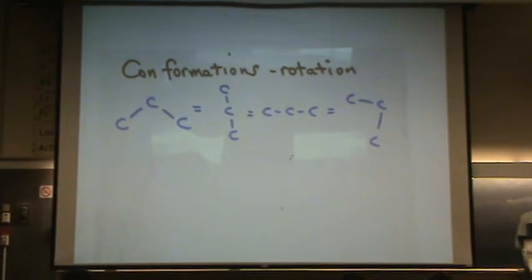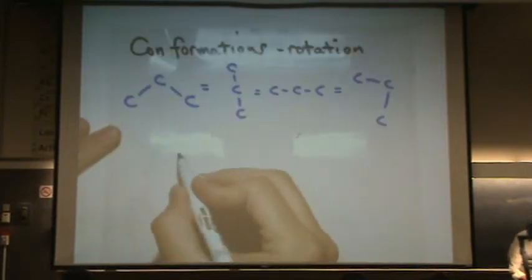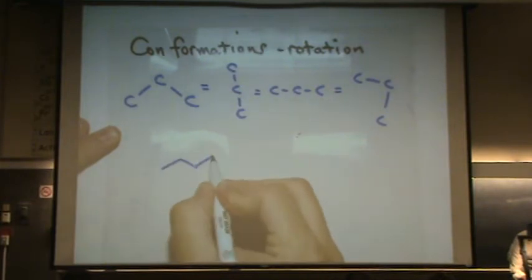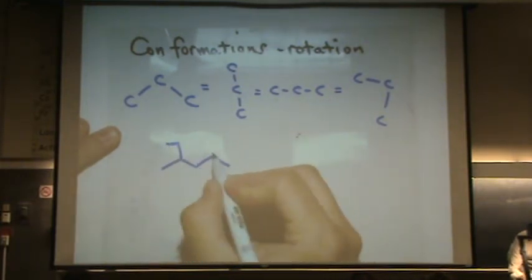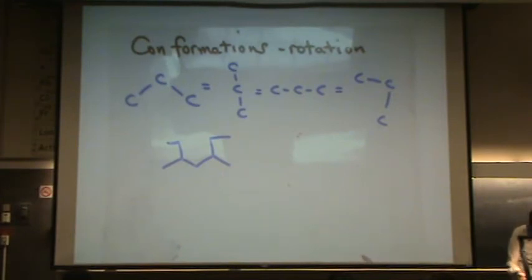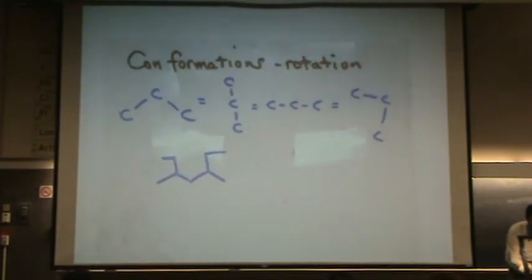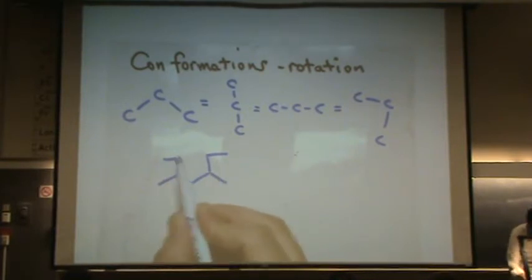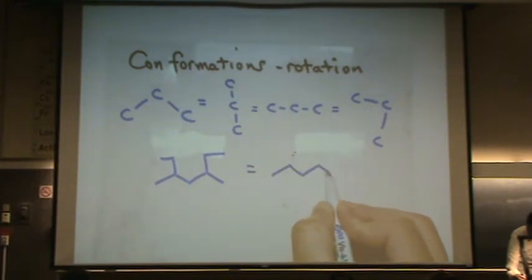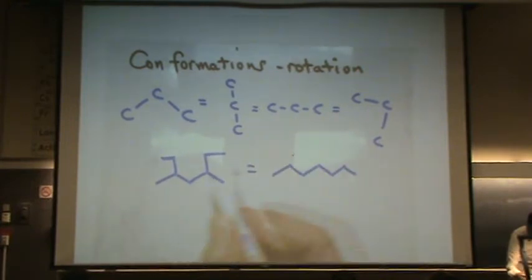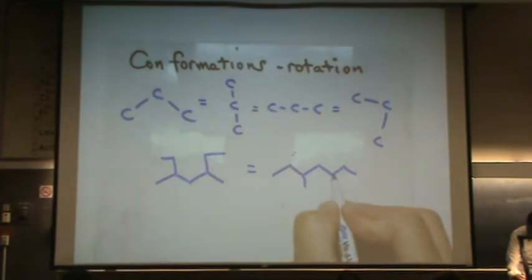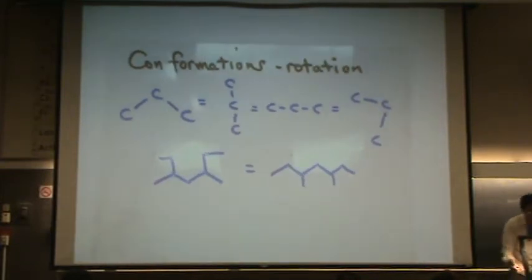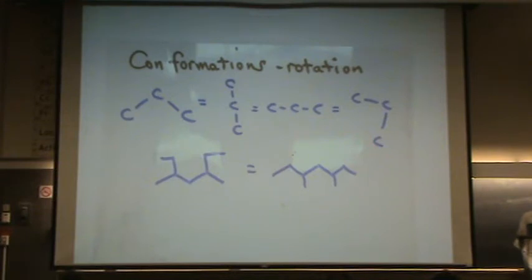So don't let that throw you. So if I draw a molecule like this, that is really, what's the longest chain here? One, two, three, four, five, six, seven. So this is the same as drawing this with two methyl groups on the one, two, three, and the five. Those are the same. Let's call it conformers, just rotating them differently.